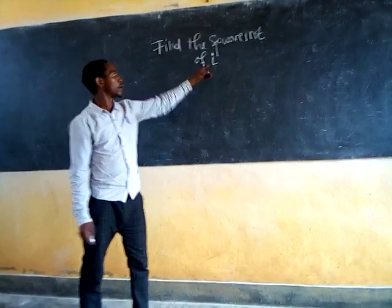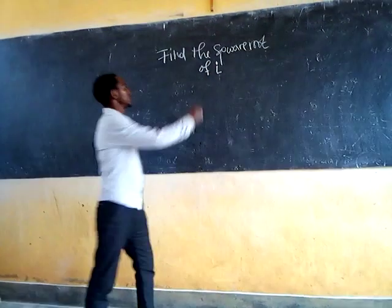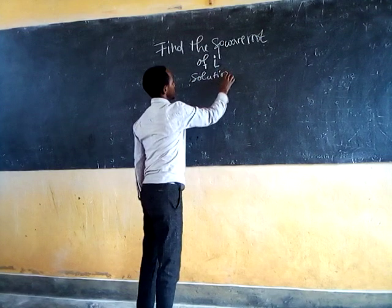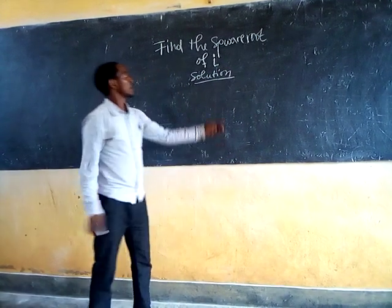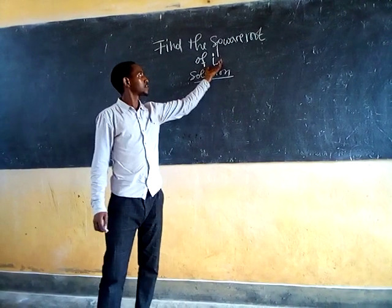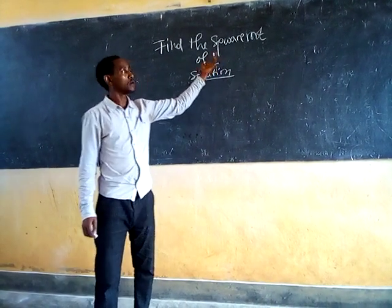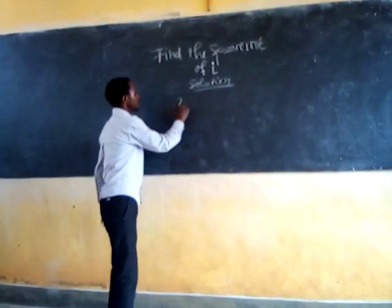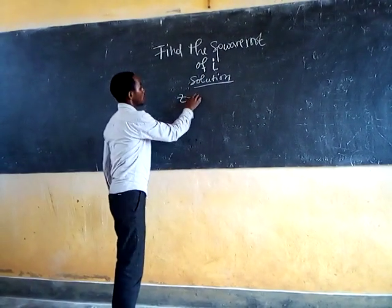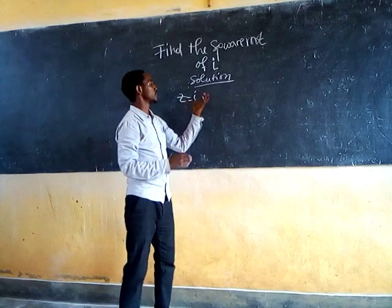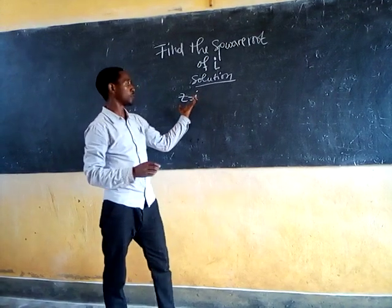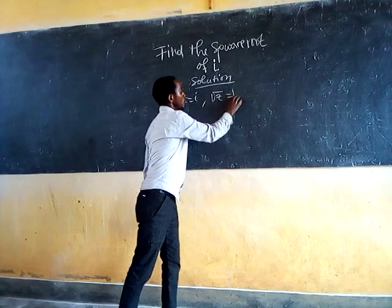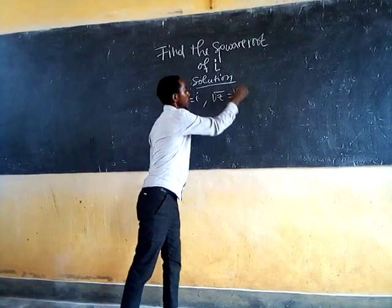Find the square root of i. This i is the complex number — this is the imaginary part. So this is the same as z equals i. Then we need to find the square root of z, which is equal to the square root of i.